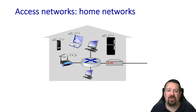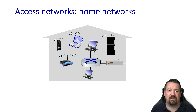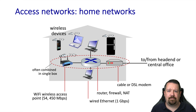Even once we reach the residence, we still aren't done with the access network. In this picture, we show the cable modem, the home router, and the wireless access point all as separate devices. In modern systems, these three may all be combined into a single box; however, they perform the same functions. Home networks today may be composed entirely of wireless links, but may include wired Ethernet links as well.